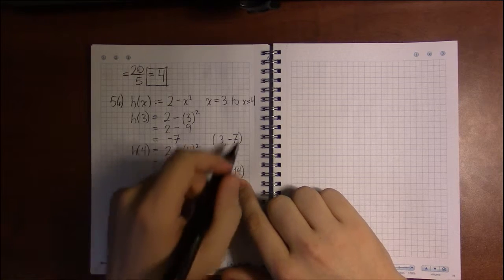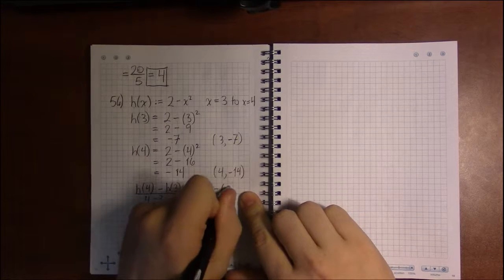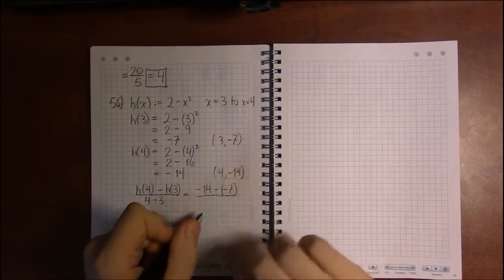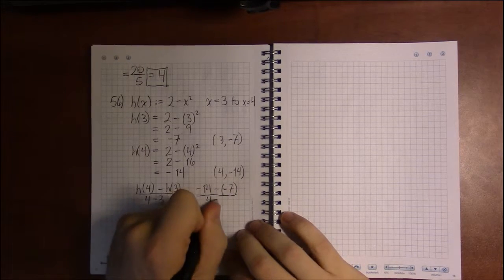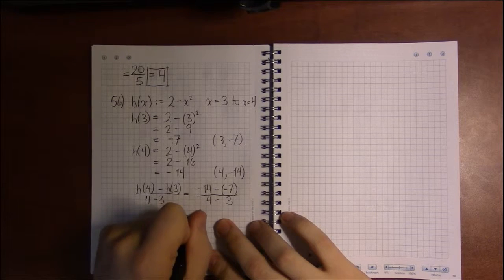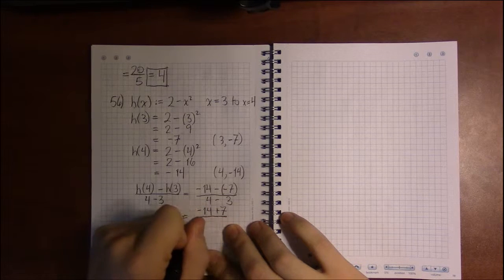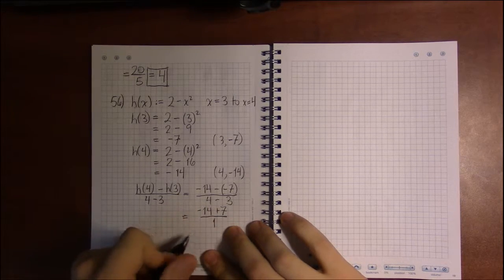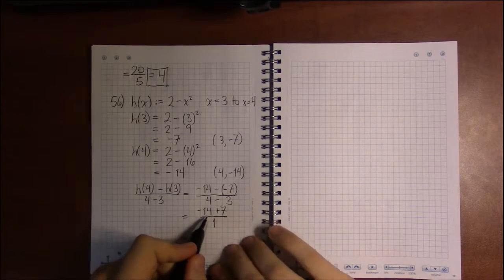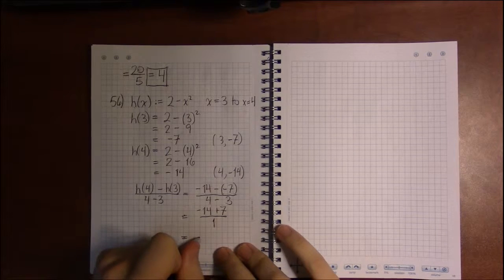...take the difference of y's: -14 minus -7, and then divide by the difference in x's, 4 - 3. And so we get -14 + 7 divided by 1. Dividing by 1 does nothing, so what we get is just -14 + 7.